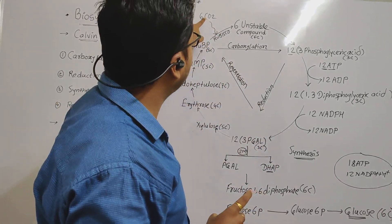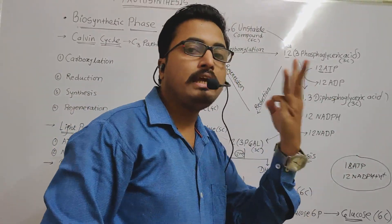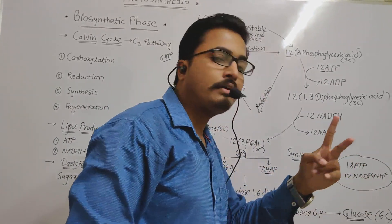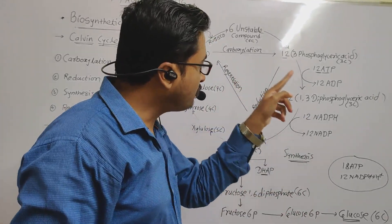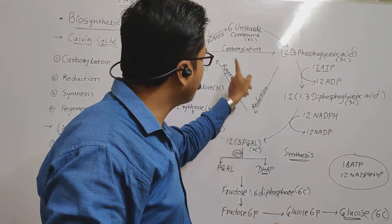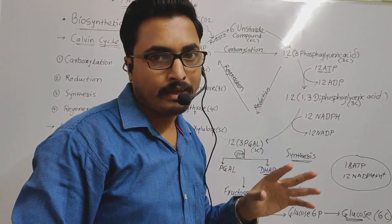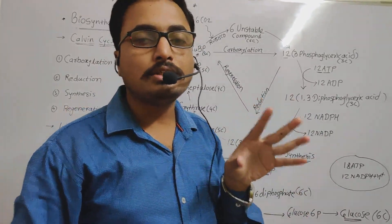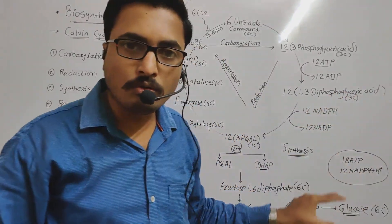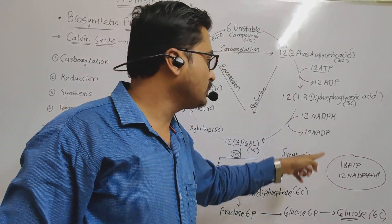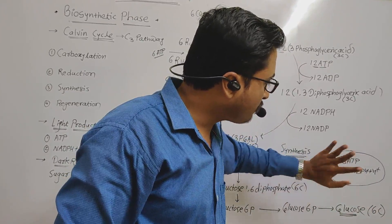To fix one molecule of CO2, 3 ATP and 2 NADPH+H⁺ are required. The most crucial step in the Calvin cycle is carboxylation — CO2 fixation is the most important step. If CO2 is fixed, the Calvin cycle continues and glucose synthesis takes place. This is the overall calculation to form one molecule of glucose, and these are the products of the light reaction being used.